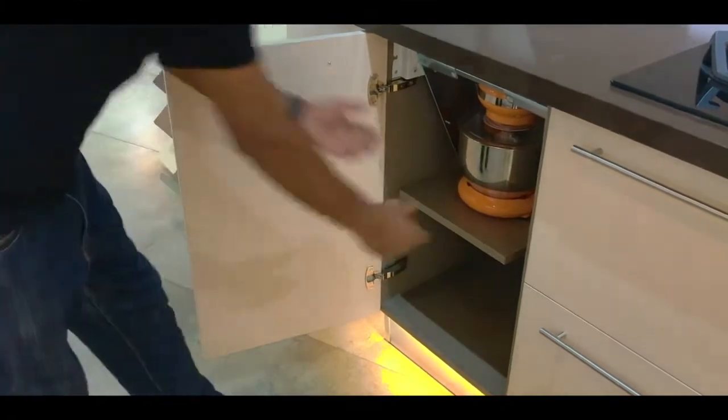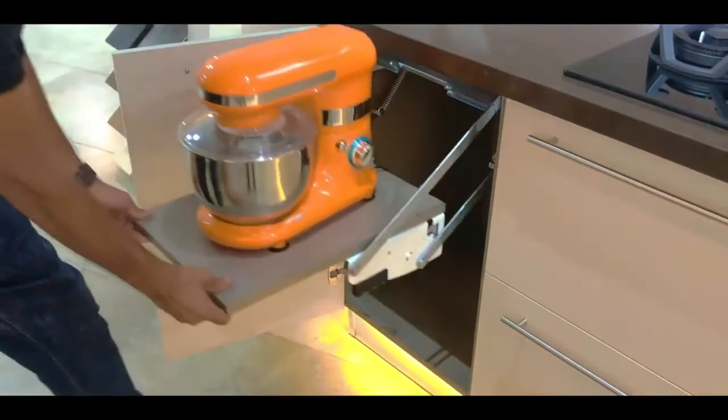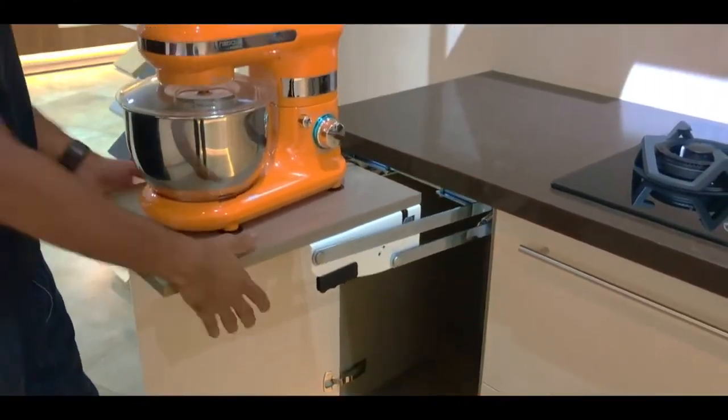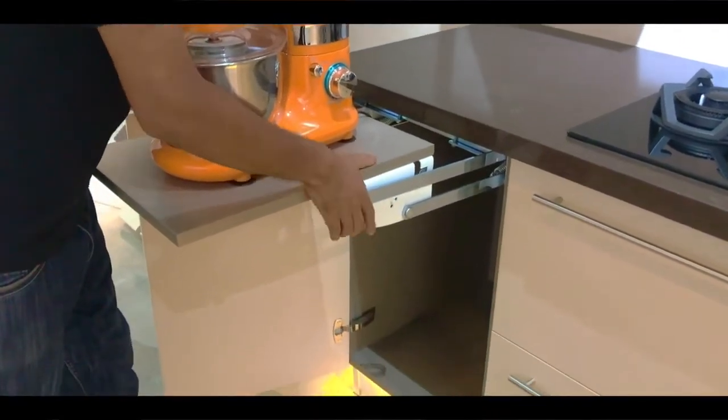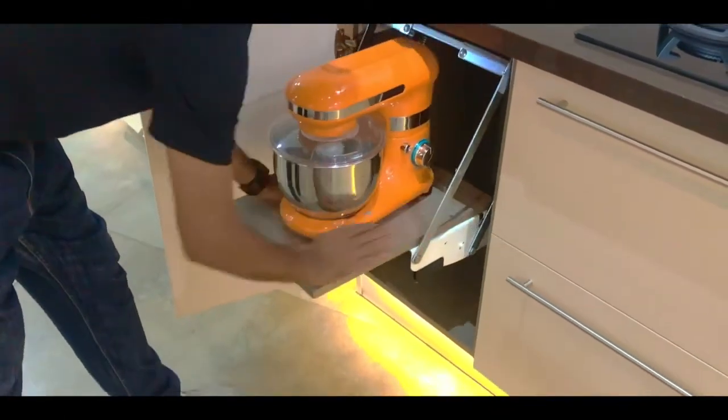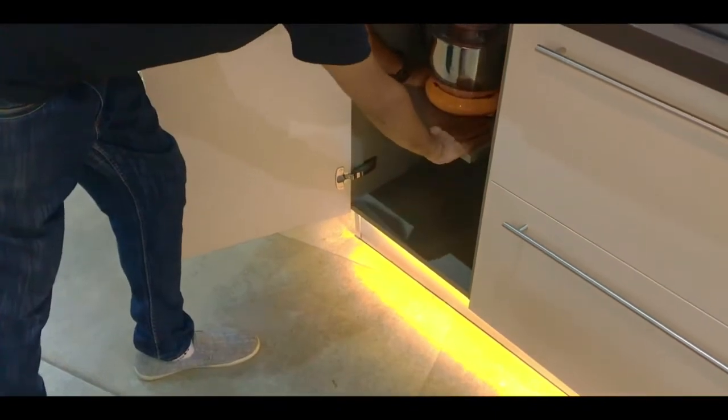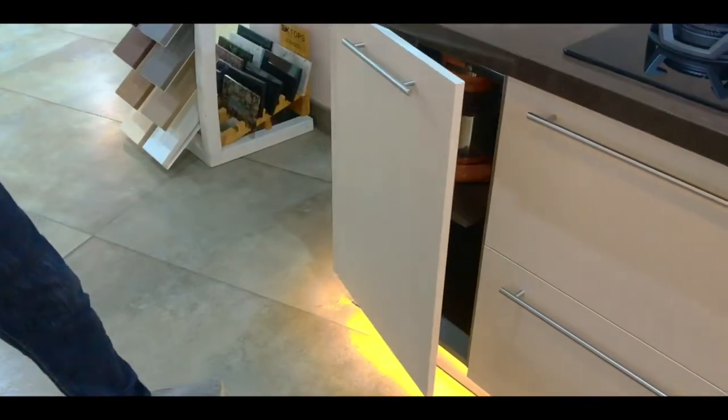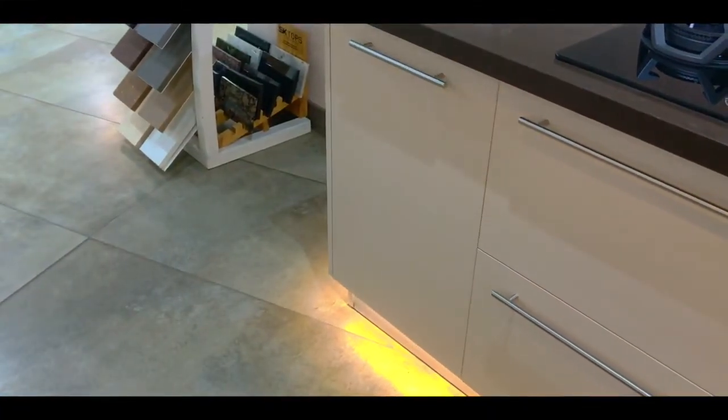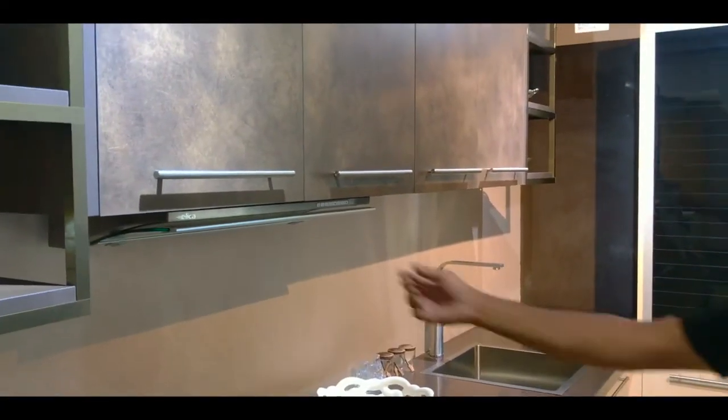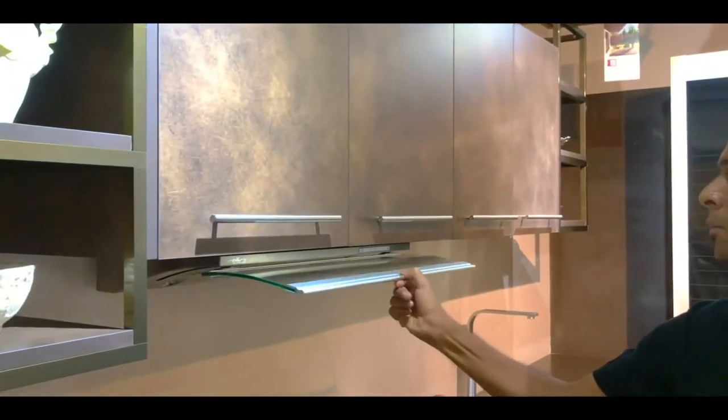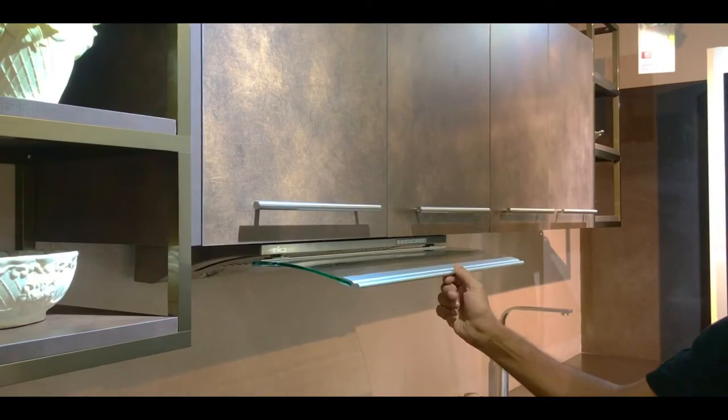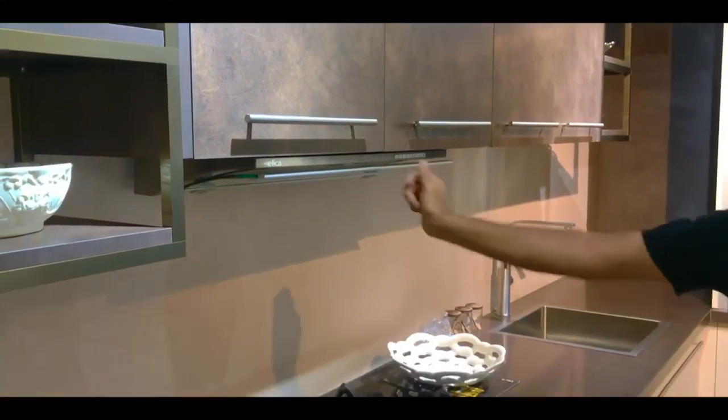The next cabinet features a mixer pullout accessory which can be integrated into the cabinet. This has a weight capacity of 25 kgs. The l-shaped kitchen also comes with an integrated chimney which can be extended out while cooking.